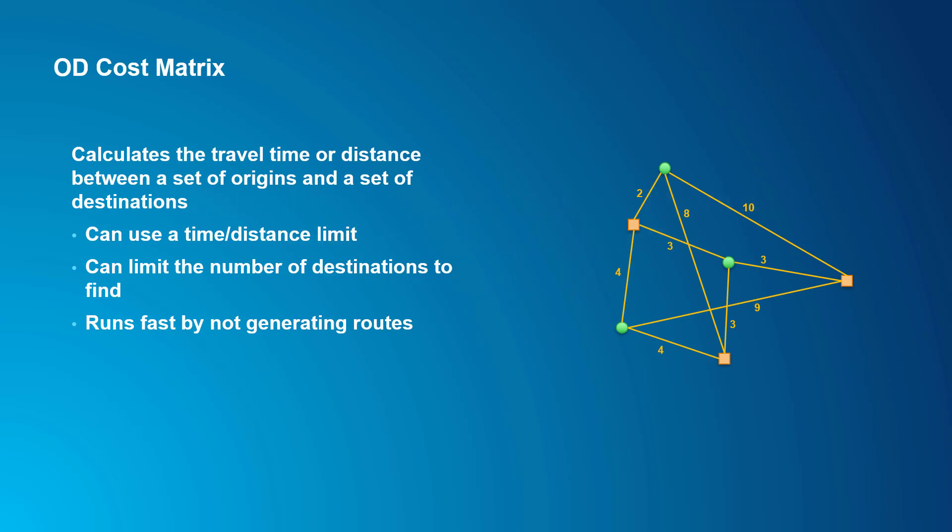Earlier, we talked about service areas and showed how you could calculate service area polygons over a time window and combine the resulting polygons into a measure of the quality of access. This is nice for visualizations if you're looking at a single origin point or just a few origin points. However, it's not a good method if you want to do a numerical analysis using a large number of origins, for example, census block centroids or the parcels of your city. For that, we want to use the OD cost matrix solver.